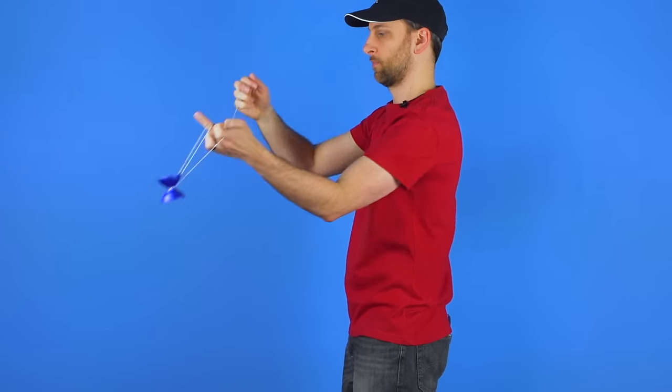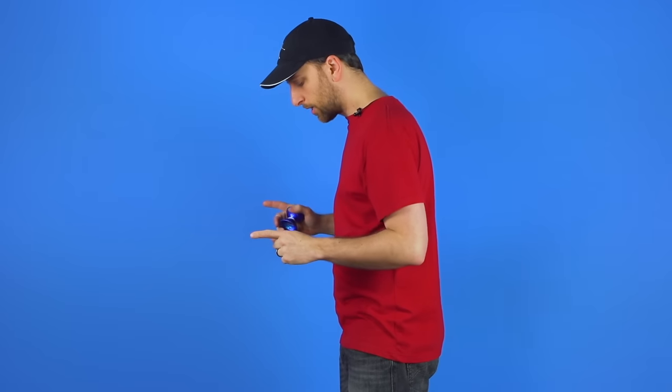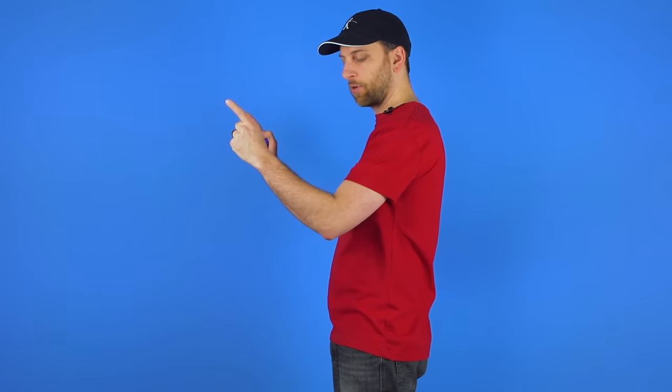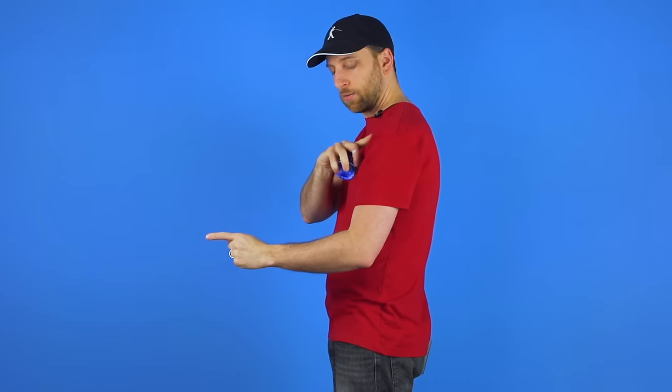Look at what happens with my arms when I do that. When I do normal Skin the Gerbil, you can see my elbows are right at my side, and basically my arm is in a 90 degree angle. As you move your elbows up, you want to keep that 90 degree angle. You're not going to bend your elbows up like this, you're going to move at your shoulders so it keeps that same position.